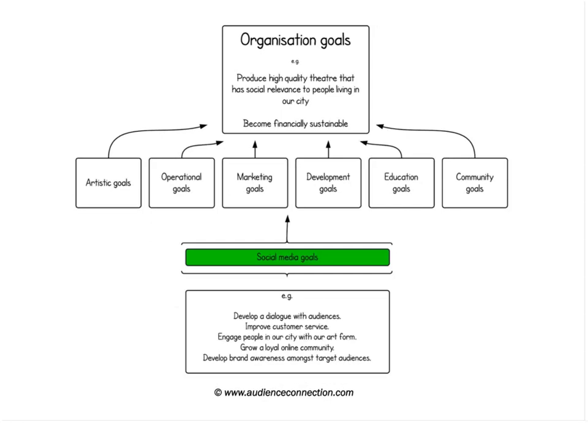Ernest Barbaric talks about a litmus test where you work backwards from your digital marketing objectives by asking 'why' right back to the core business objective. We can apply this to our social media goals. For example: 'We want to increase the number of people talking about our work on Facebook.' Why? Because we want to know how they are responding to our work and we want them to share their experiences. Why? Because one of our artistic goals is to make work that is relevant to our target audiences. Why? Because our reason for being is to produce high quality theatre that has social relevance to people living in our city. It's a great exercise to really test your social media goals.